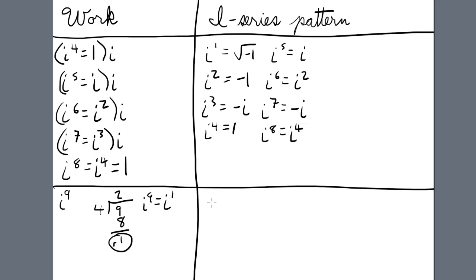Let me do this again. Let's take i to the twenty-third. So we divide four into twenty-three, goes five times for twenty, and the remainder is three. So that means i to the twenty-third is equivalent to i cubed.